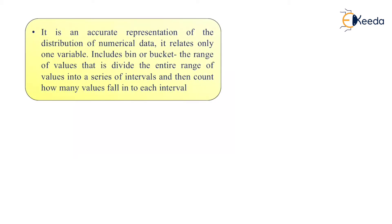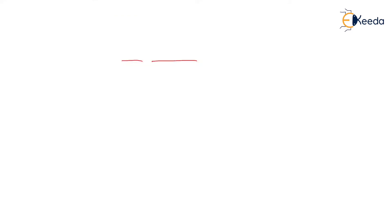It is an accurate representation of distribution of numerical data. It relates only one variable. Includes bin or bucket, the range of values that is divided, the entire range of values into a series of intervals. And then count how many values fall in each interval. What we are doing here? We are calculating this, that is a bucket. Each and every bucket will get calculated, on the basis of that we find the value. That is called as histogram.